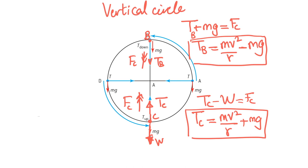When you compare the two, you see there's a negative sign for T_B and a positive sign for T_C, which tells you that the tension at C is larger than the tension at B. So the tension at point C is definitely greater than the tension at point B. When you add two numbers you get a larger number; when you subtract two numbers you get a smaller number — common sense. So tension at C is greater than the tension at point B.